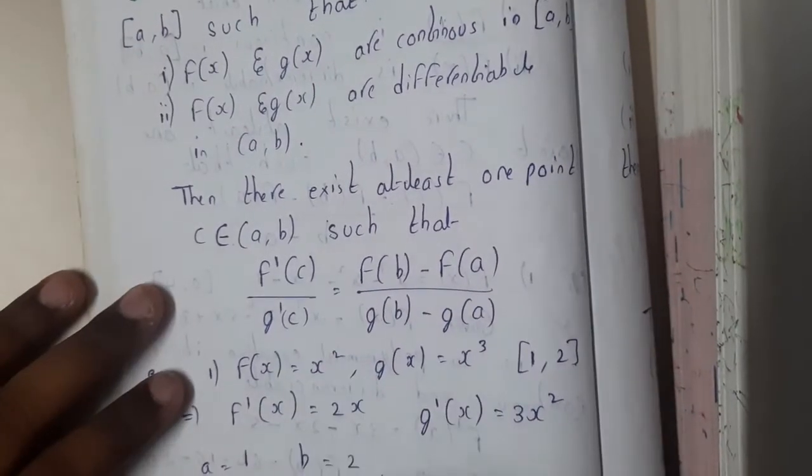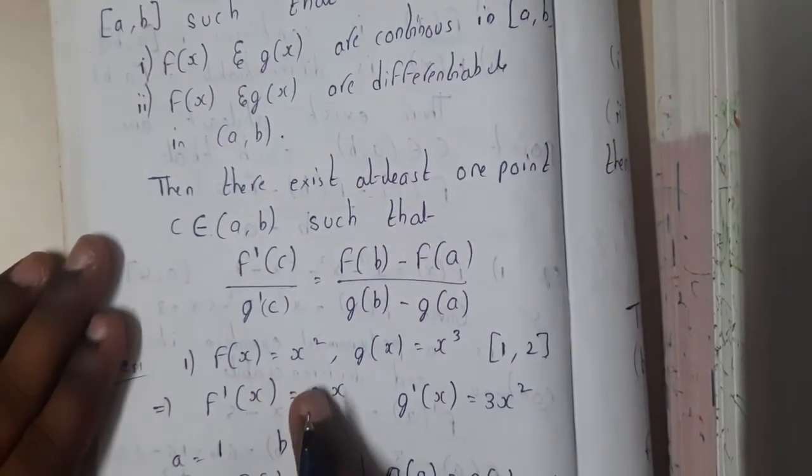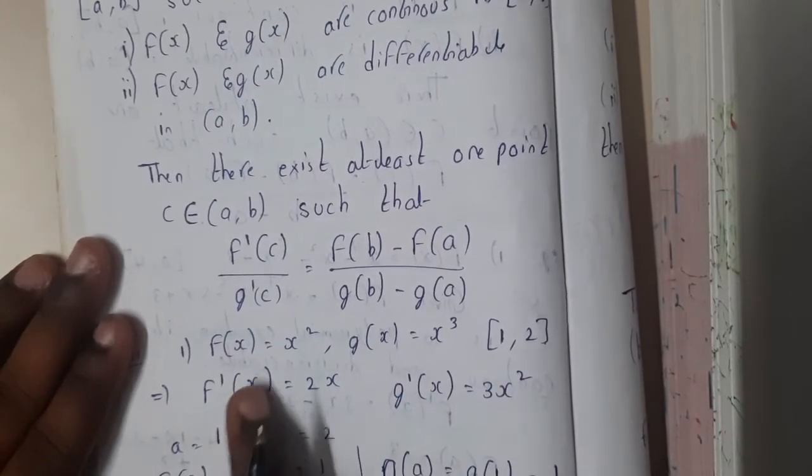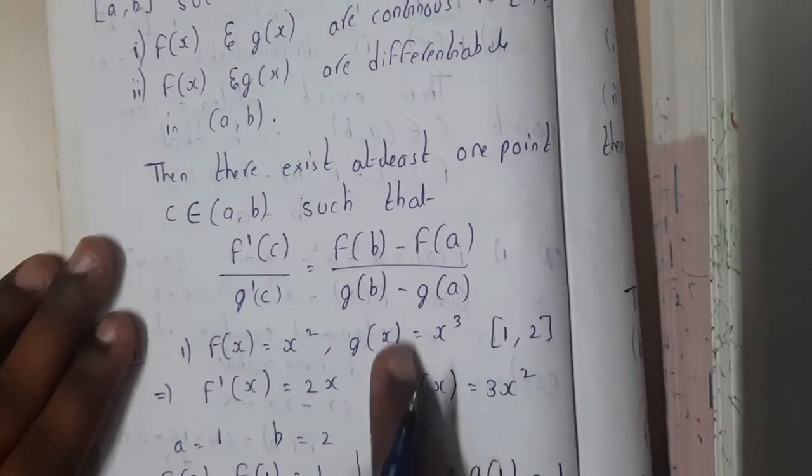So f of x equal to x square, g of x equal to x cube in between 1 comma 2. Just do differentiation, that is nothing but 2x and 3x square.